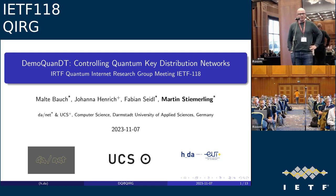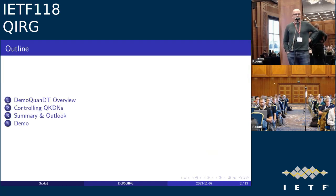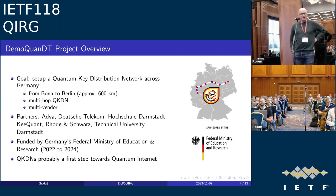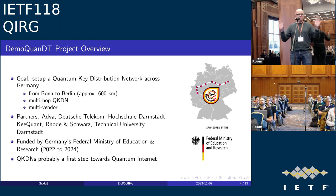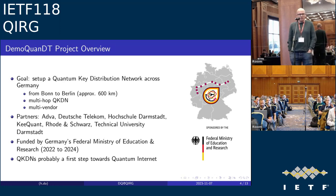Hello. My name is Martin Stiemerling. This work was done with Malte Bauch, Johanna Henrich, and Fabian Seidel — Fabian will also show a demonstration at the end of this presentation. We have a project called the DeMoDuNT DT project. The goal is to set up a quantum key distribution network in Germany running from Bonn to Berlin, which is roughly 600 kilometers — a multi-hop quantum key distribution network. The intention is to use multiple different vendors for the different quantum distribution segments. We have partners like Adbar, Deutsche Telekom, Technical University of Darmstadt, P-Kranton, and Rohde & Schwarz, and we are funded by the German Ministry of Education and Research.